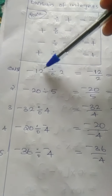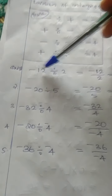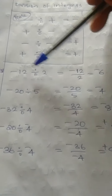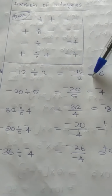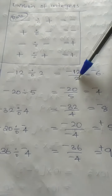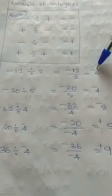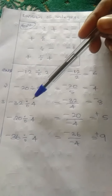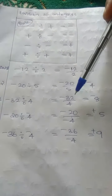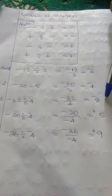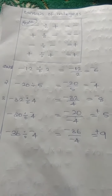First question: minus 12 divided by 2. We can write this as minus 12 by 2, which equals minus 6. We know 12 by 2 is 6, and we put a negative sign. Next, minus 20 divided by 5 becomes minus 20 by 5, which equals minus 4. And minus 32 divided by 4 becomes minus 32 by 4, which equals minus 8. Try to do all these questions the same way.